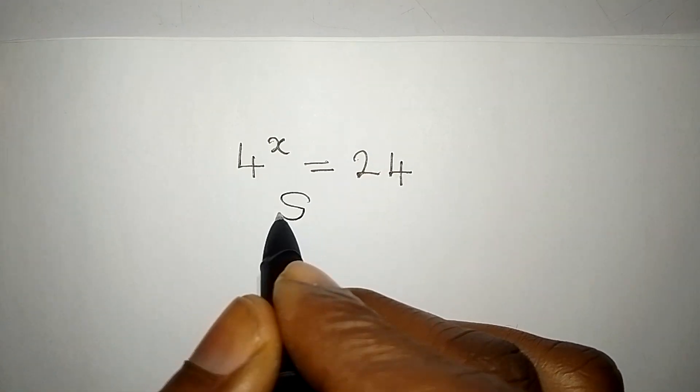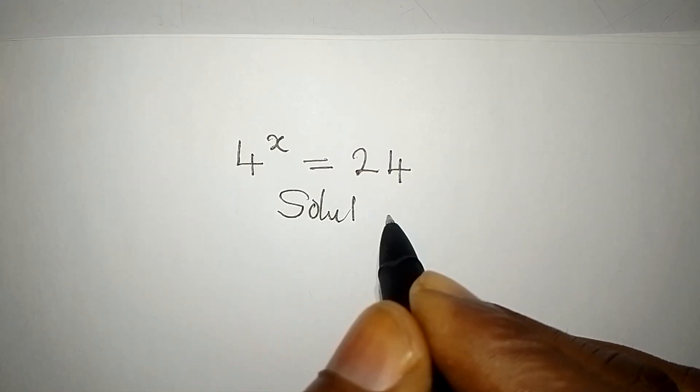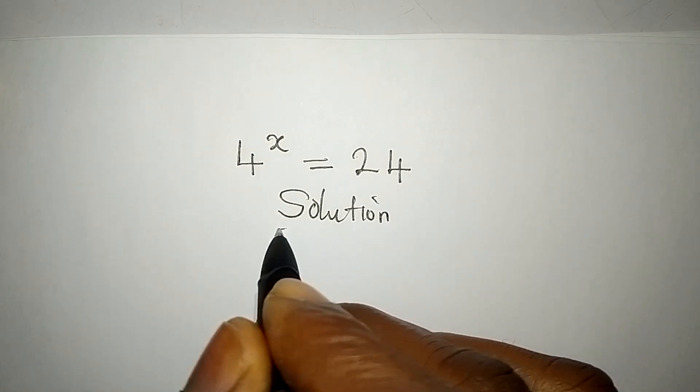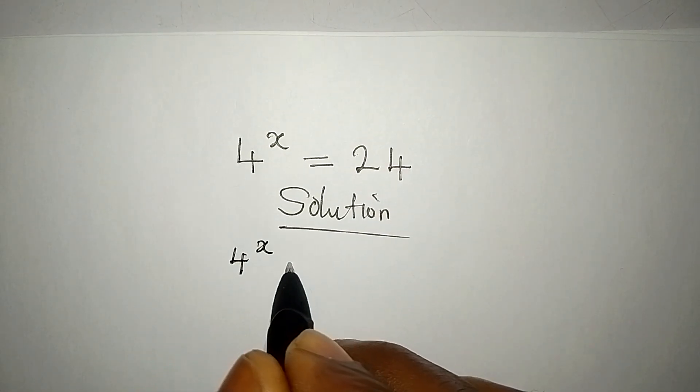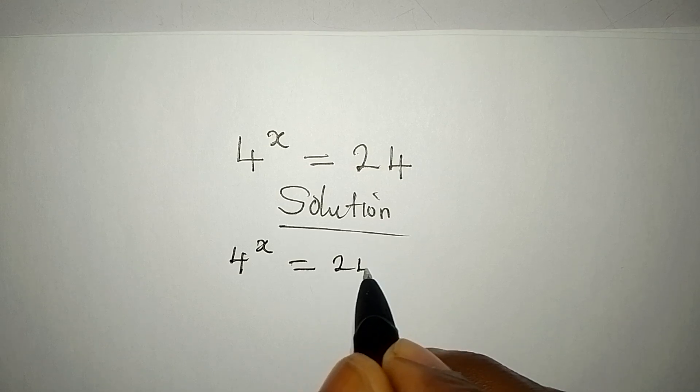Hello everyone. Let's provide the solution to this. 4 to the power of x equals 24.